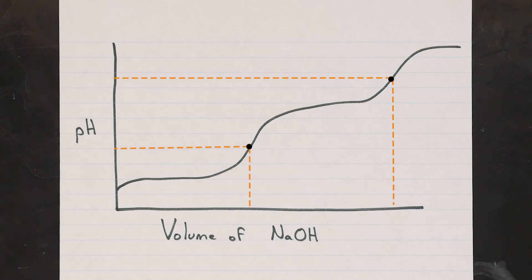So that must mean that at exactly half of that volume, you'll find your half neutralization point. By tracing that point up to your curve, and then to the left, you find your pH at the half neutralization point. Which as we saw earlier, is exactly equal to the pKa you're looking for.